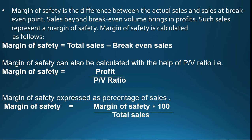If margin of safety is expressed in terms of percentage, the formula is: Margin of Safety (%) = (Margin of Safety × 100) divided by Total Sales.